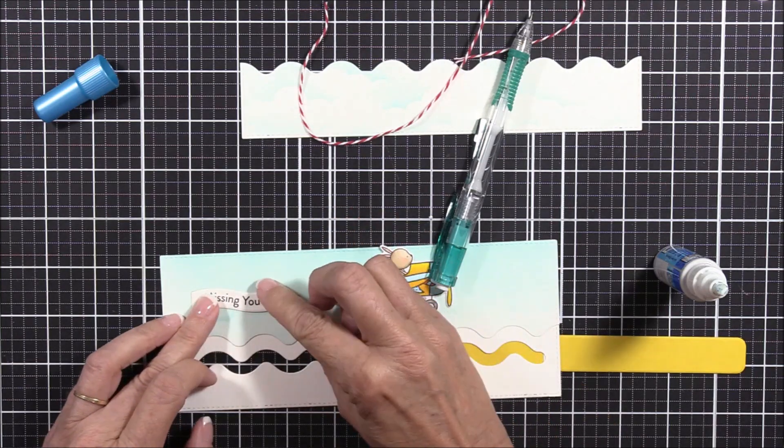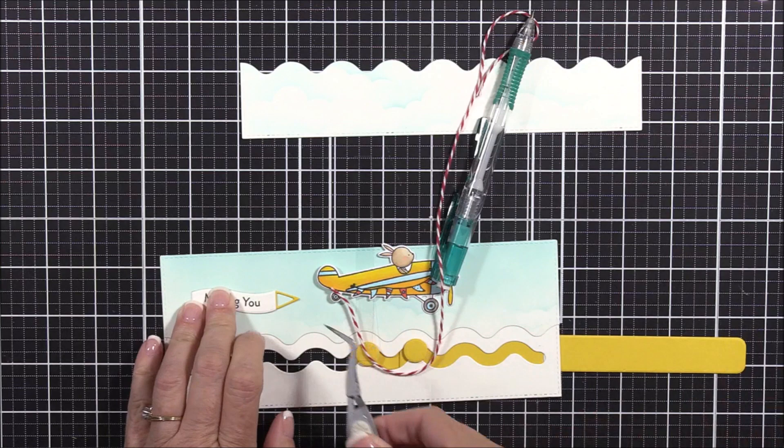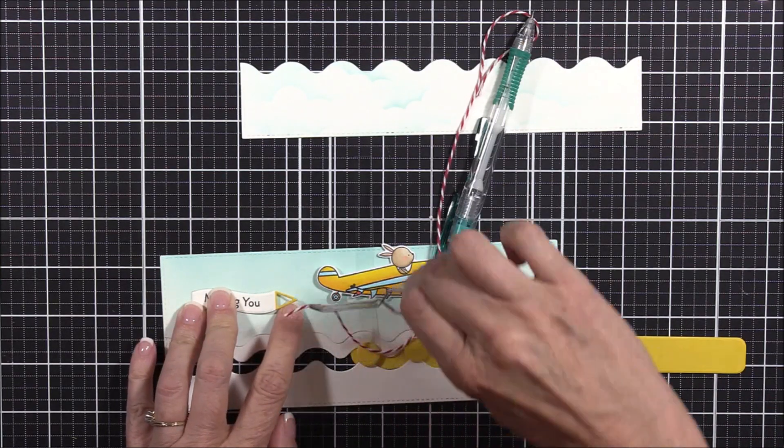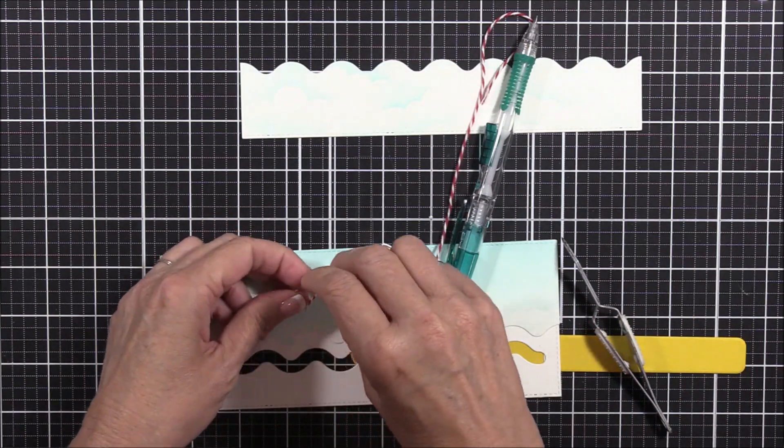In this case, I should have glued down the Banner tab at the same time that I adhered the banner, because it interfered with the movement of the airplane. These are the things that you'll learn by trial and error, hopefully, before you have to start all over.